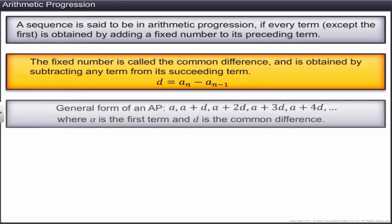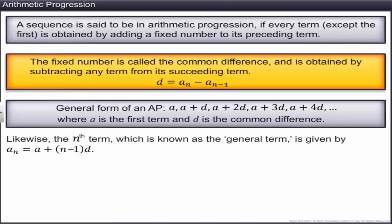The general form of an arithmetic progression is: a, a+d, a+2d, a+3d, a+4d, and so on, where a is the first term and d is the common difference. Here a+d is the second term, a+2d is the third term, a+3d is the fourth term, and so on. The nth term, also known as the general term, is denoted by aₙ and equals a + (n−1)d.